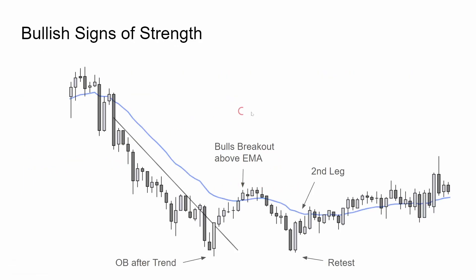Here's the same chart with different things pointed out. There's an outside bar at the end of a trend after three pushes down — one, two, three. An outside bar late in the trend is good for a reversal, and that gets a second leg higher. Looking at leg one, pull back, leg two into the EMA.